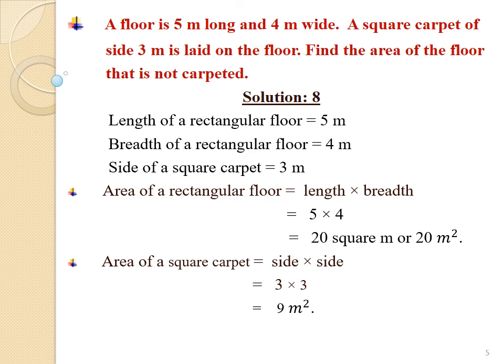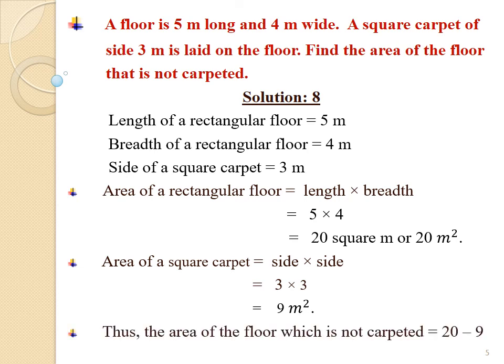Now let us find out the area of the floor which is not carpeted by subtracting the area of the square carpet from the area of the floor. Area of floor not carpeted equals area of the floor minus area of the square carpet equals 20 minus 9 equals 11 square meters. Thus, the area of the floor which is not carpeted is 11 square meters. We will solve sum numbers 9, 10 and 11 afterwards.